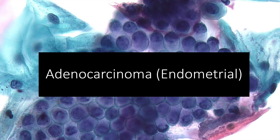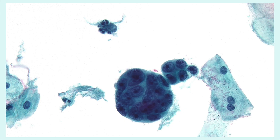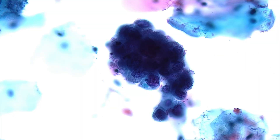Now we'll cover adenocarcinoma of endometrial type. This case was confirmed as endometrial adenocarcinoma on biopsy — note the tightly clustered atypical glandular cells with focal cytoplasmic vacuoles. Another case was a FIGO grade 2 endometrial adenocarcinoma, showing increased nuclear atypia and macronucleoli. A further case of uterine serous carcinoma showed increased nuclear-to-cytoplasmic ratios and macronucleoli — when you see macronucleoli, uterine serous carcinoma should cross your mind.